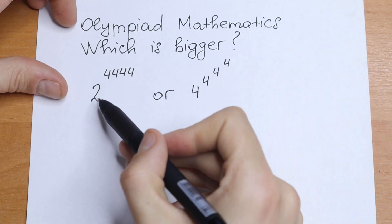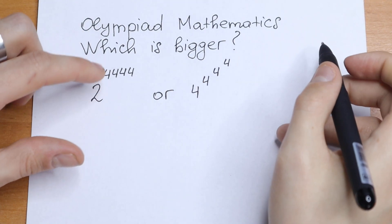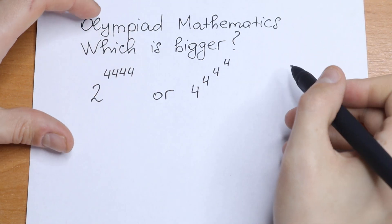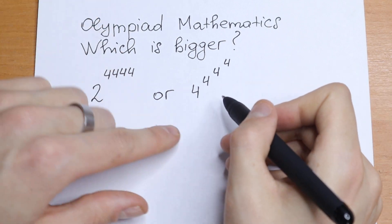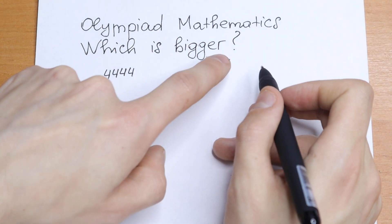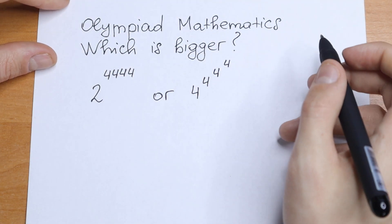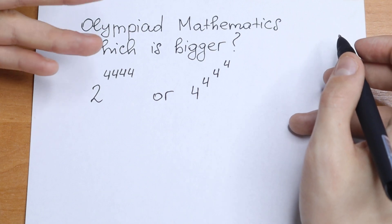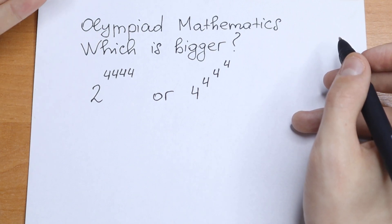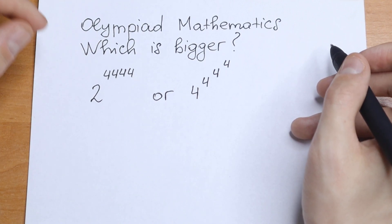Which one is bigger? On the left we have 2 to the power 4444, or on the right we have 4 to the power 4 to the power 4 to the power 4. If you know an answer, write your answer right now in a comment — it will be really interesting to read it.